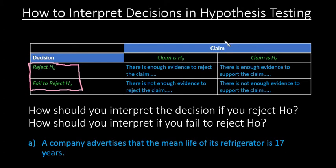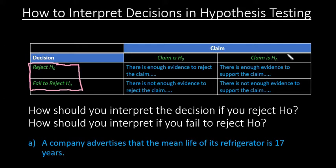For every hypothesis test you will have a claim. Your claim can either be about the null hypothesis or about the alternative, and depending upon whether your claim is about the null or the alternative, it does change your wording when you are interpreting your decision. Your claim will be about the null hypothesis if it is an equality statement — something like equals, greater than or equal to, at least, anything like that. The claim is going to be about the alternative anytime it contains an inequality statement like less than, more than, not equal to, etc.